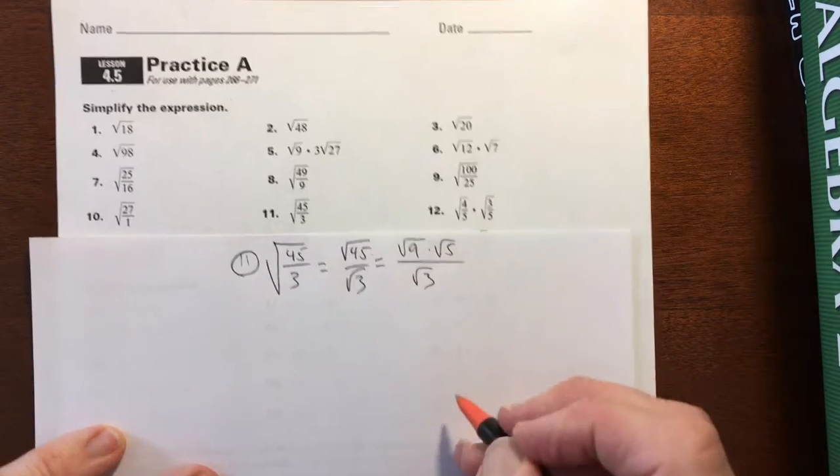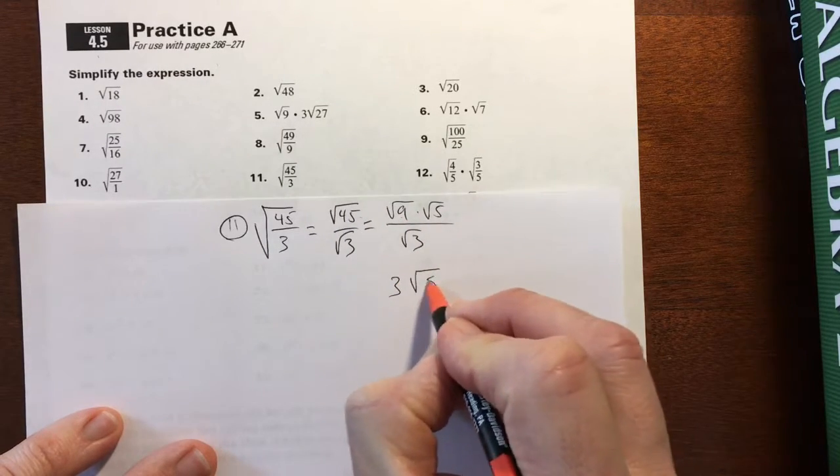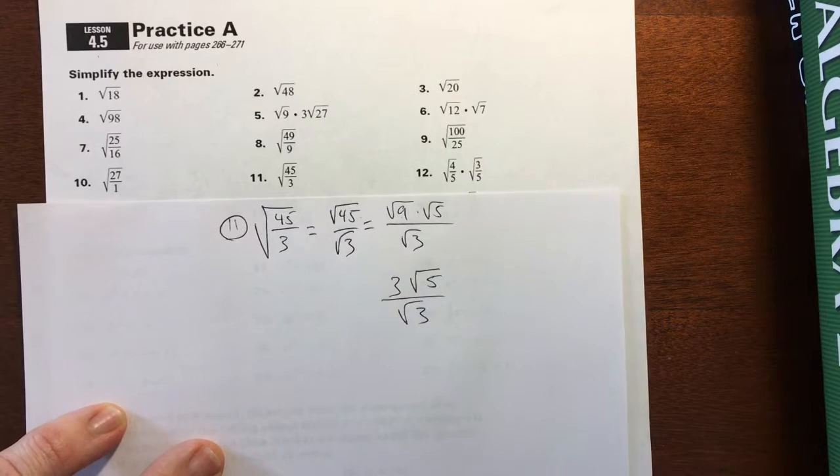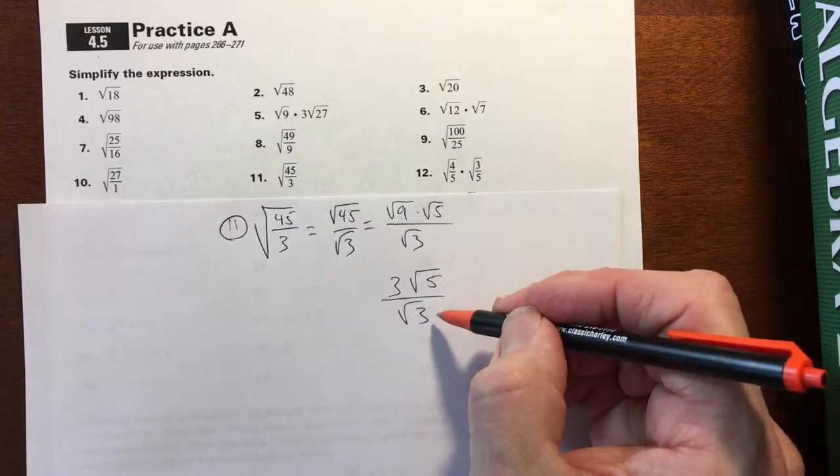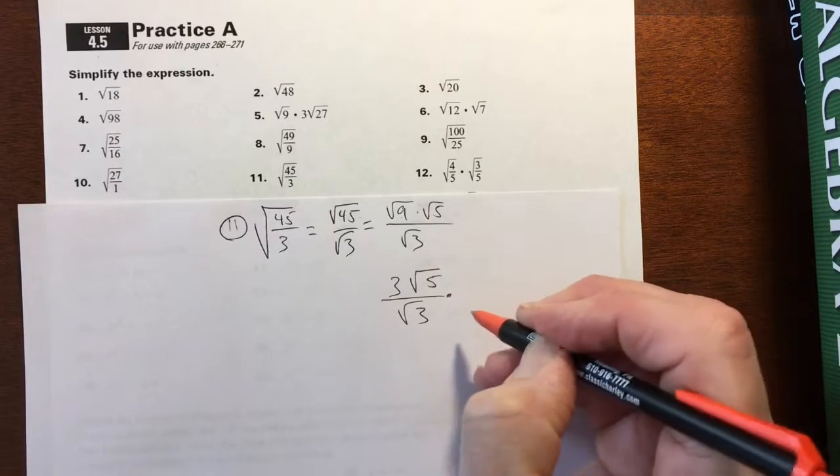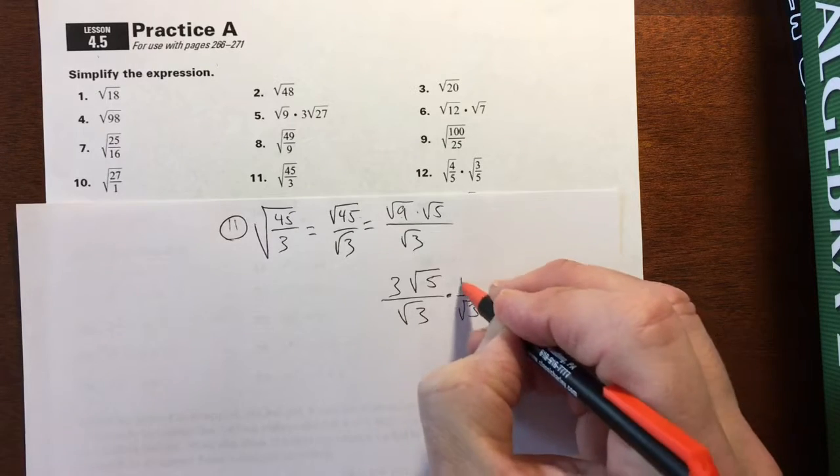And then we'll start working vertically now. We can make this 3 square root of 5 and square root of 3. So we've done all we can in the numerator. Now down here we've got to rationalize this to get rid of it. Again, you're multiplying by 1, but square root of 3 over square root of 3.